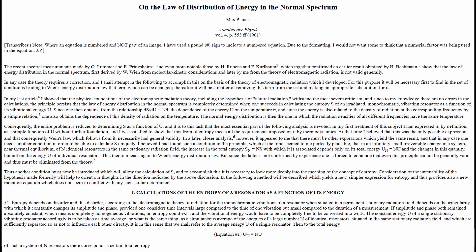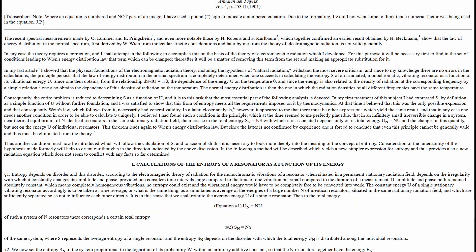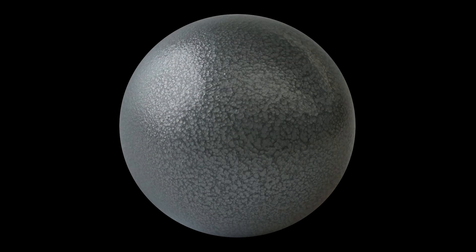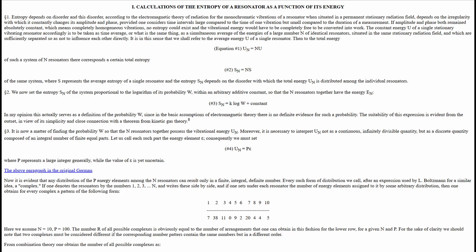In 1901, he published a paper regarding the energy and entropy of what he called resonators. A resonator, according to Planck, is a sphere, typically made of iron, with a perfectly black hole in it that acts as a perfect blackbody. It absorbs electromagnetic radiation when cold, and emits electromagnetic radiation when hot. It is here where he proposes his crucial idea.